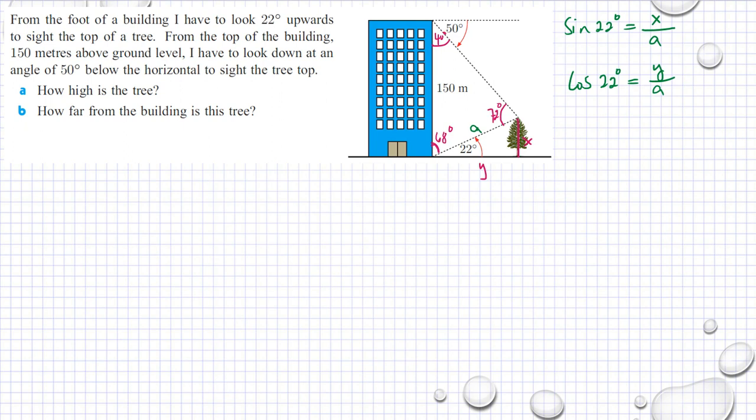There we go. Sine law says that we have A divided by sine 40 degrees, the opposite of side A, is equal to 150 meters divided by sine 72 degrees. So we have our A is equal to 150 multiplied by sine 40 degrees divided by sine 72 degrees.